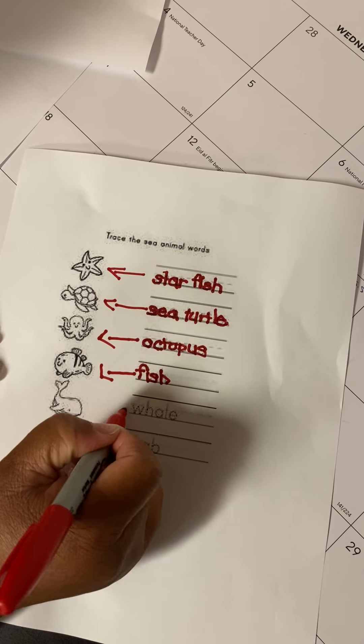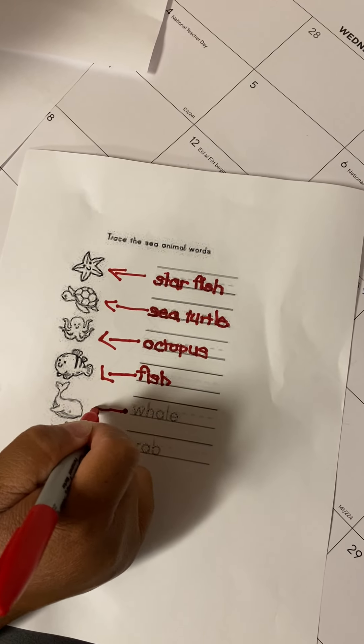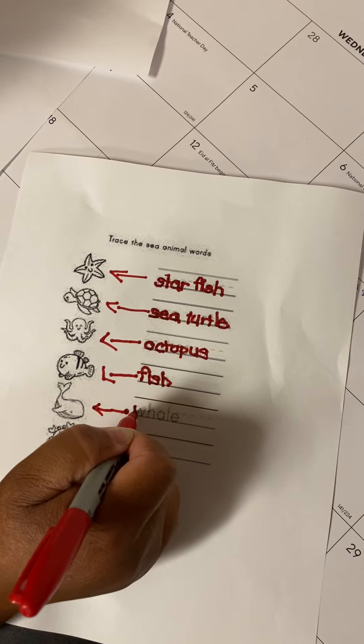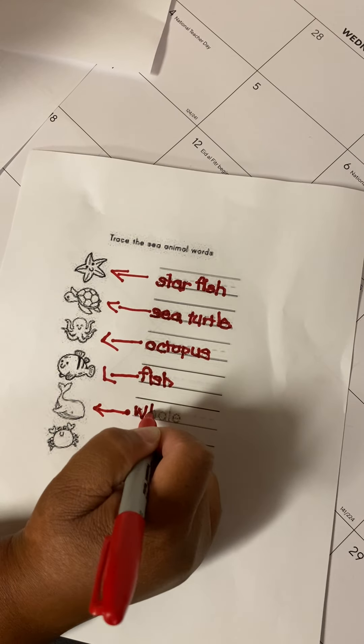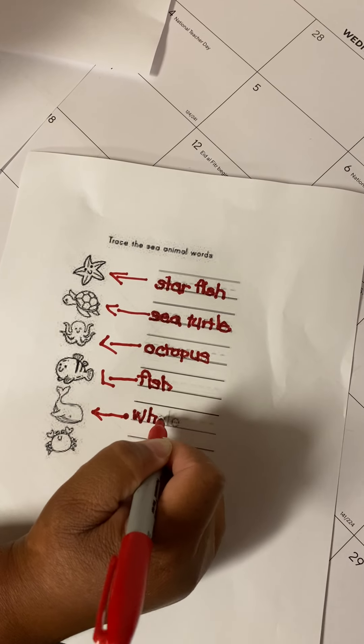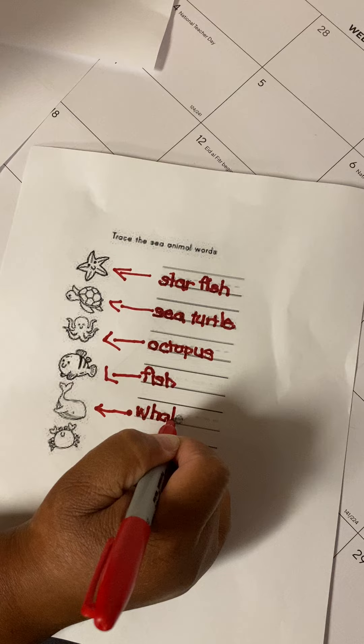Next animal is a whale. Whale is in the ocean and whales are different colors. There could be blue whales, there could be a black and white whale.